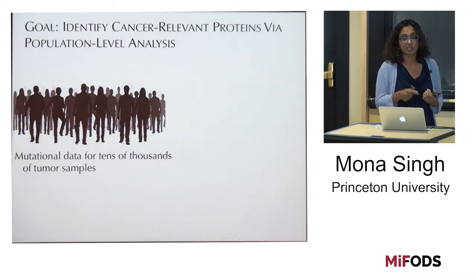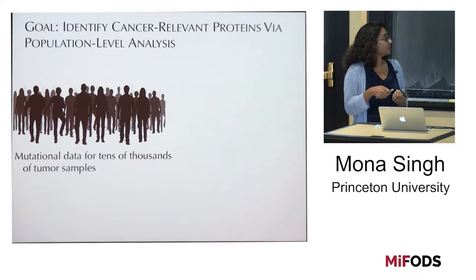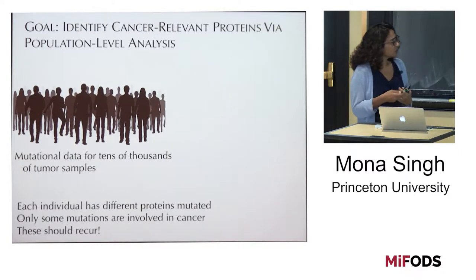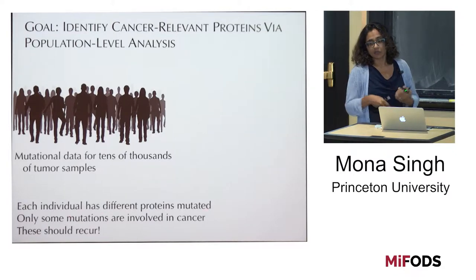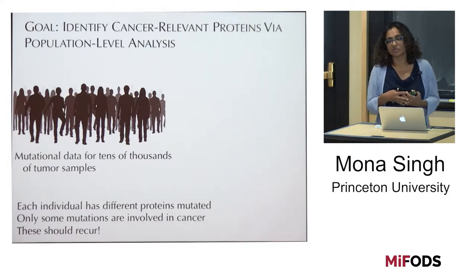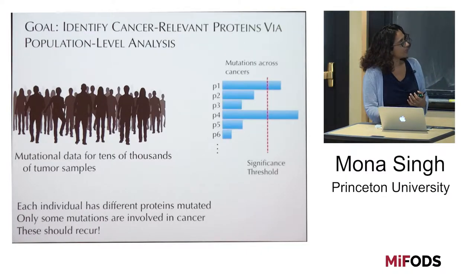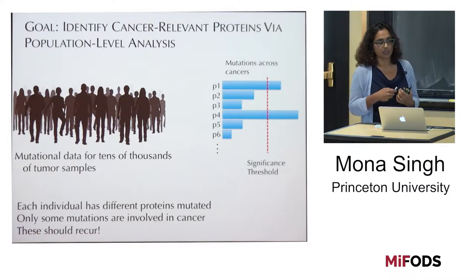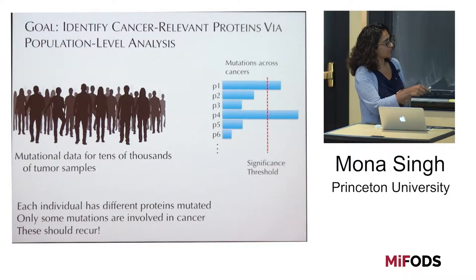Even though we figure out which proteins are mutated within a single person's tumor, we now have mutational data for tens of thousands of tumor samples — this is the last five to ten years. Each individual whose tumor has been sequenced has different proteins mutated, even looking at the same cancer type. Only some of these mutations are involved in cancer. One base-level idea is that those mutations that are actually cancer-relevant should recur. So a basic analysis would look at all the data together and count how many times each protein is mutated across tumors.